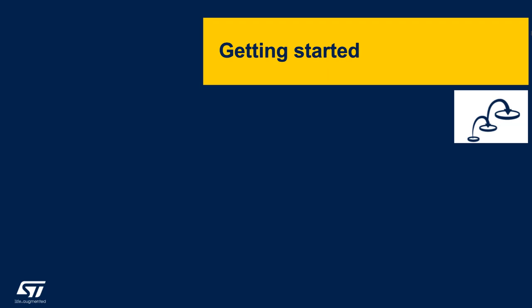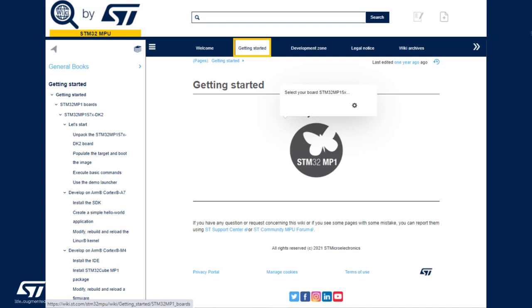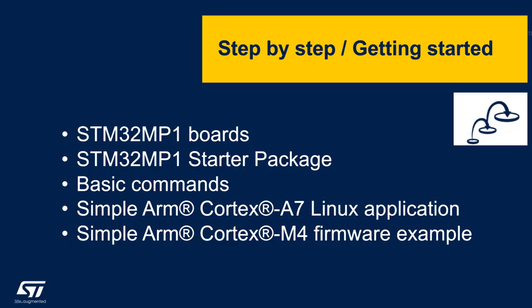The dedicated area allows you to get started with the product. Follow the proposed links and start step-by-step using the product: unpack the board, flash an image on the board, execute basic commands on the board, use the demo launcher, create a simple application on the Linux side from the developer package, and use MCU firmware with STM32CubeIDE and STM32CubeMP1 package.